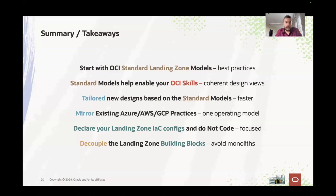As takeaways: start with the CIS standard models — they're full of best practices, help you enable your skills, and have core and design views. Tailor your new designs based on standard models; it can go really fast. Mirror your existing practices if you have them, targeting one operating model — that will decrease your overall TCO. Declare your infrastructure as code and do not code it; keep focused on your configs, easily changed by Cloud Ops. Decouple the landing zones into building blocks — as you grow, decoupling is key so production isn't stopped by Terraform planning on UAT. No monoliths from size M on.